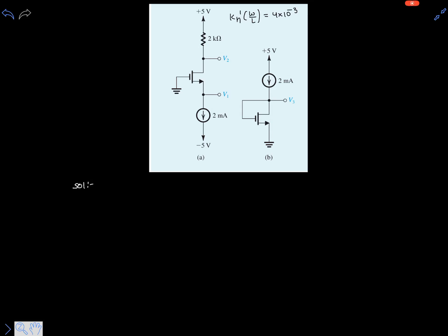Let's solve part (a) now. It's clear that the drain current id is 2 milliamperes. So v2 equals 5 minus 2 kilo-ohms multiplied by id, which is clearly 5 minus 2 times 2.